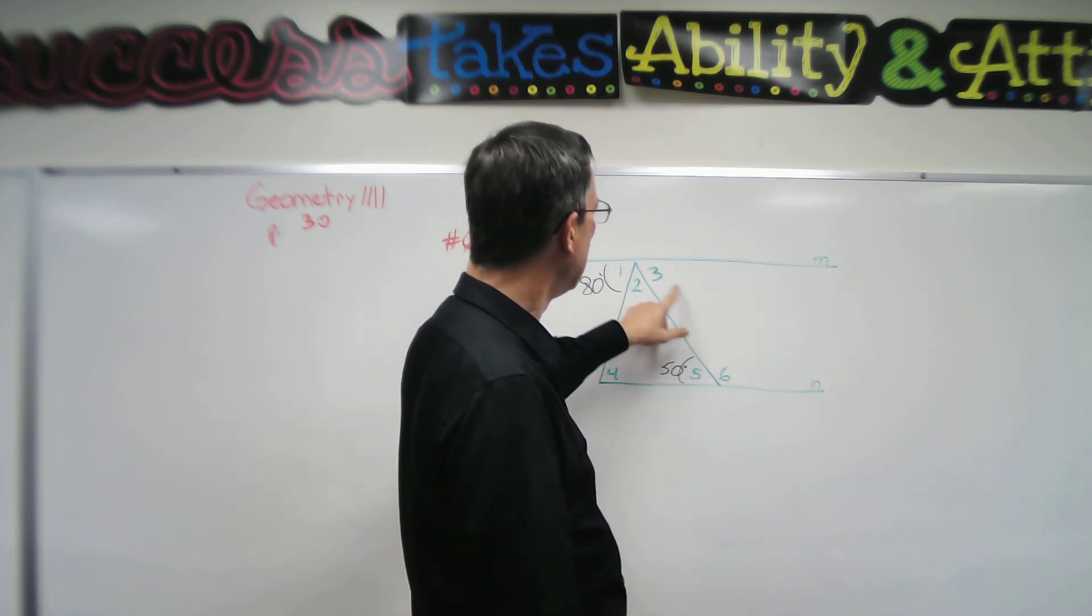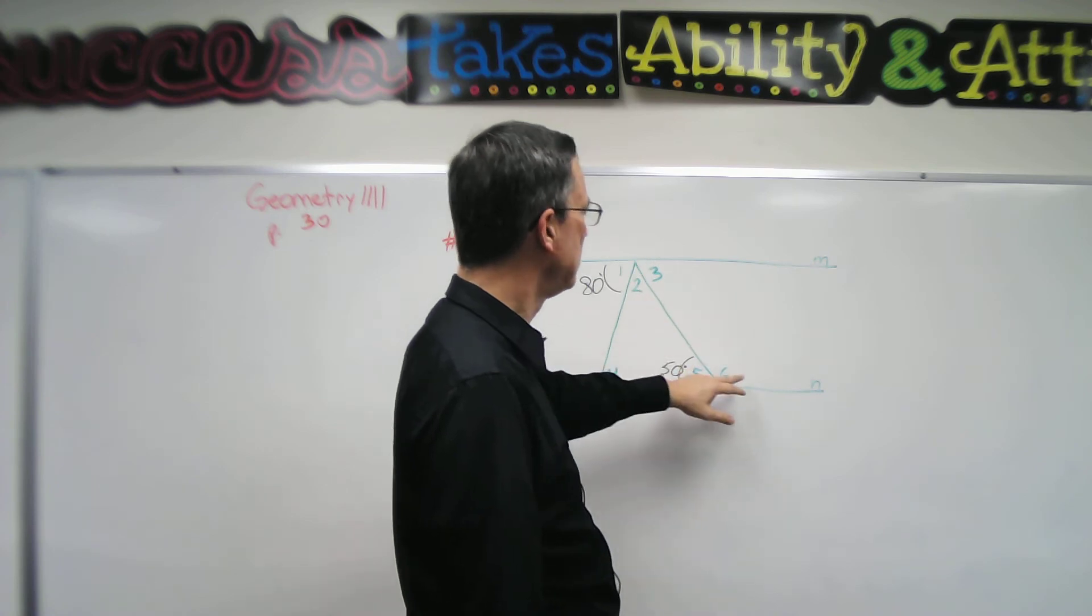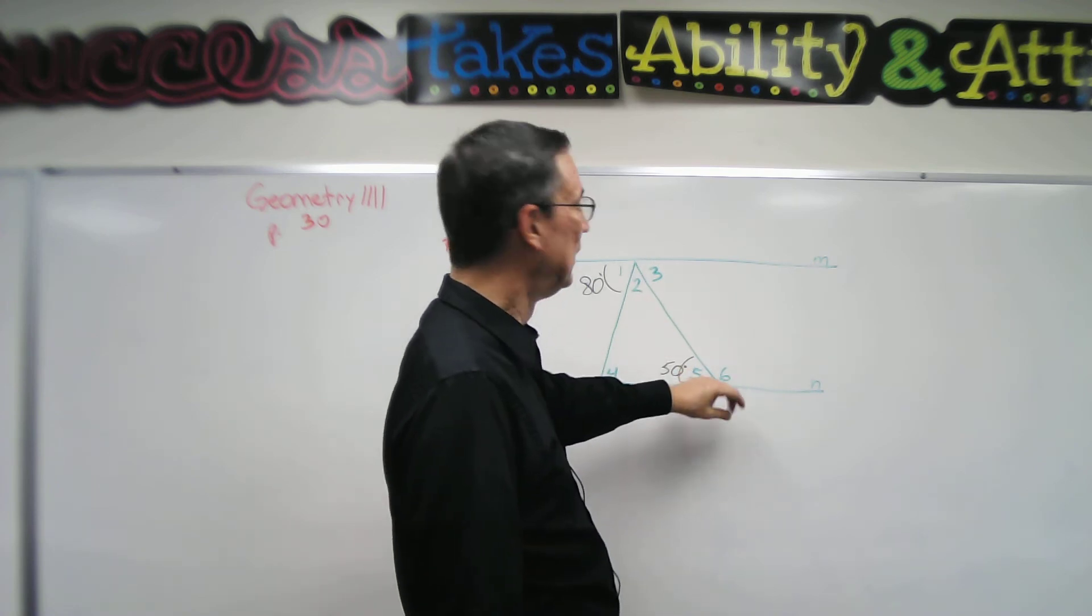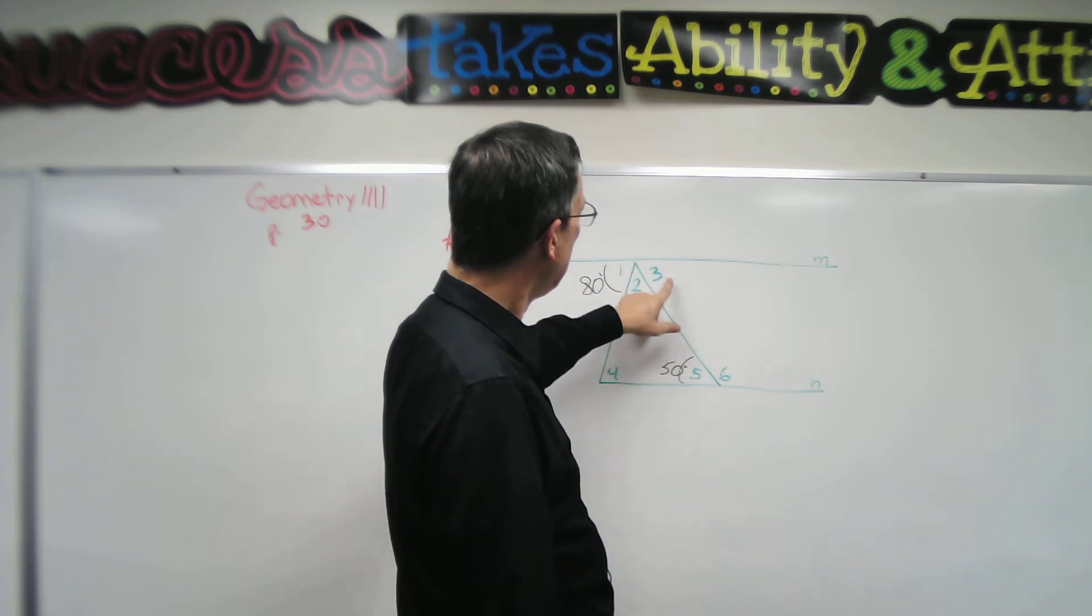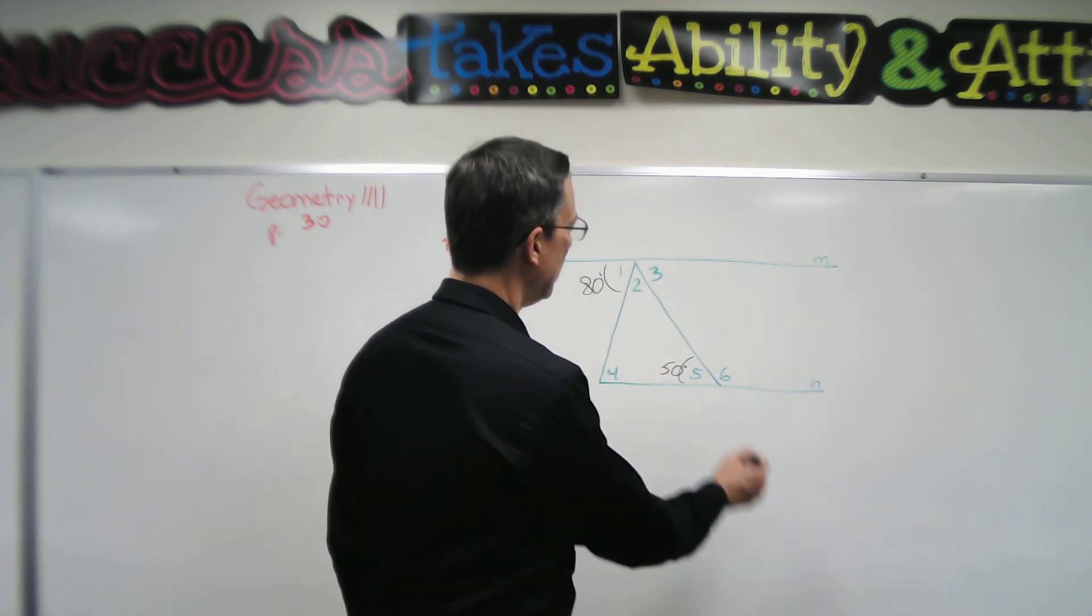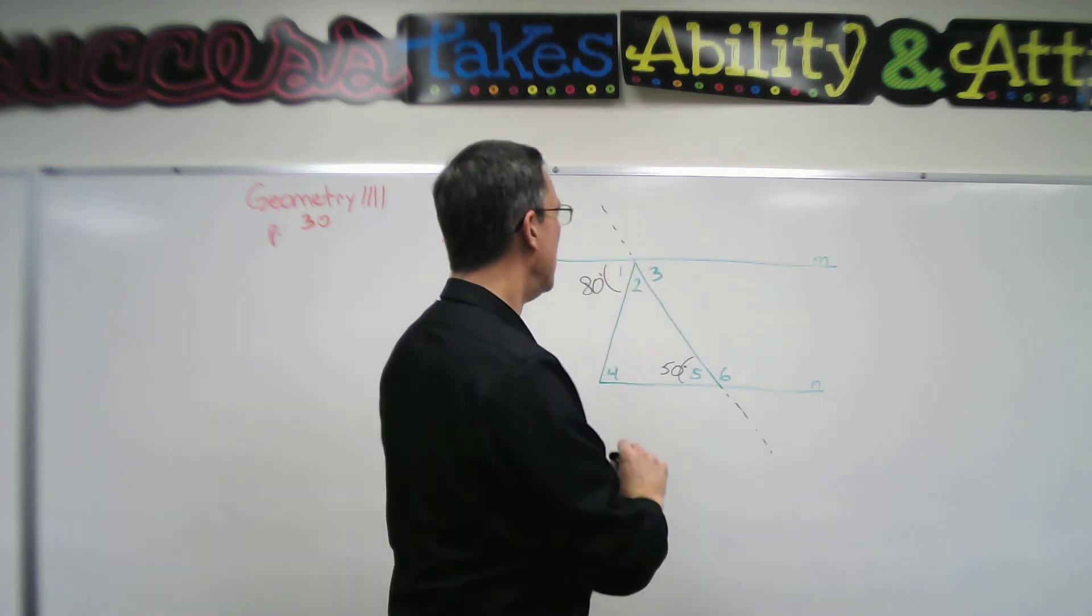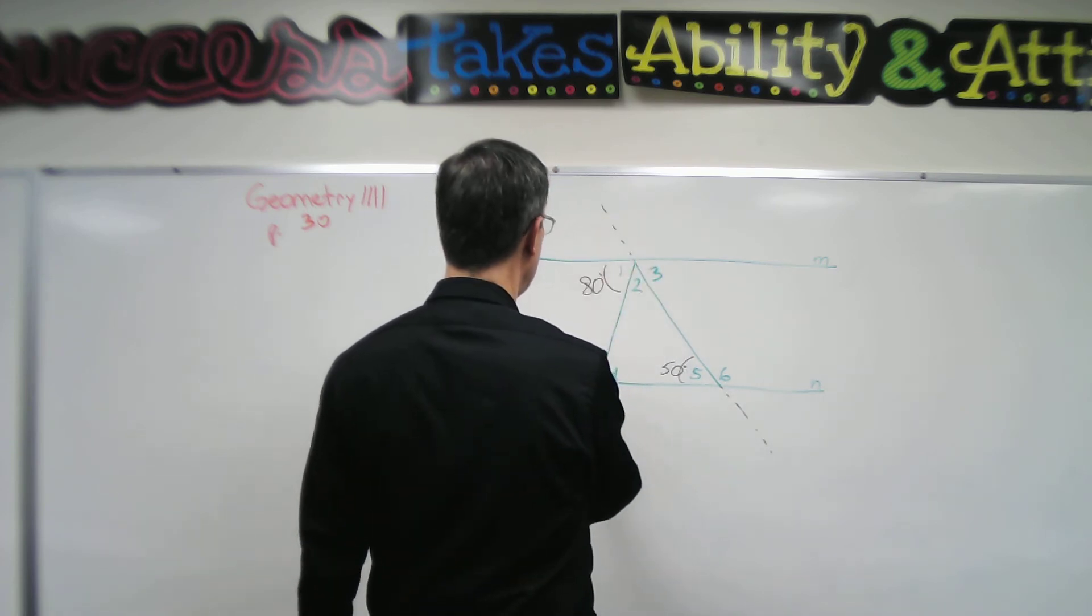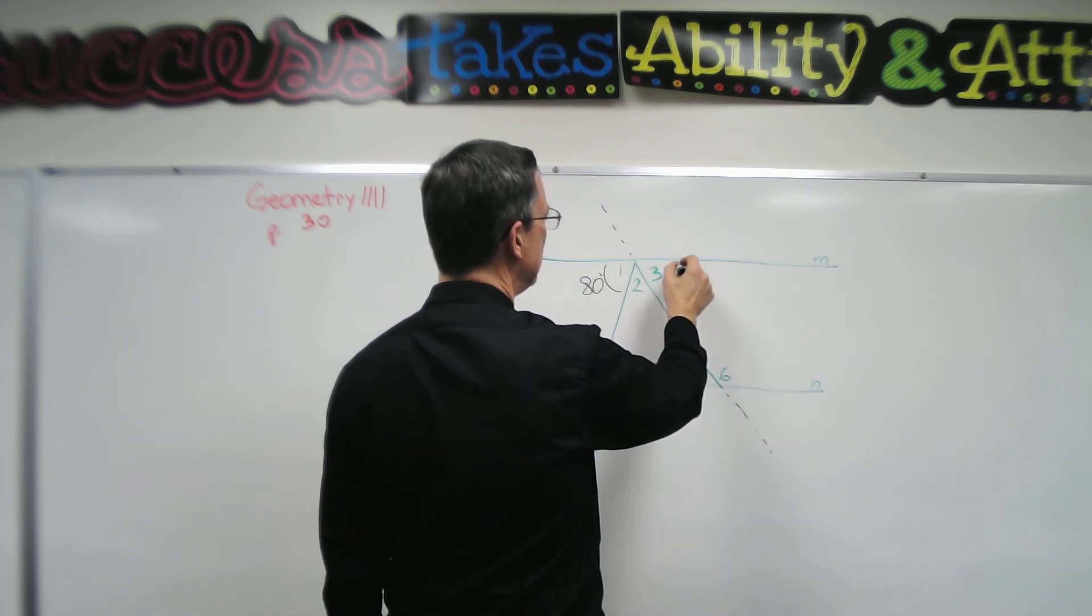...that says that the two angles on the inside, on the same side of this intersecting line right here, have to add up to something. Or you could look at this and say if this is 50 and this is on the other side, they are alternate interior angles. Sometimes it helps to extend these lines so you see—I have two parallel lines and I have a line going this way.